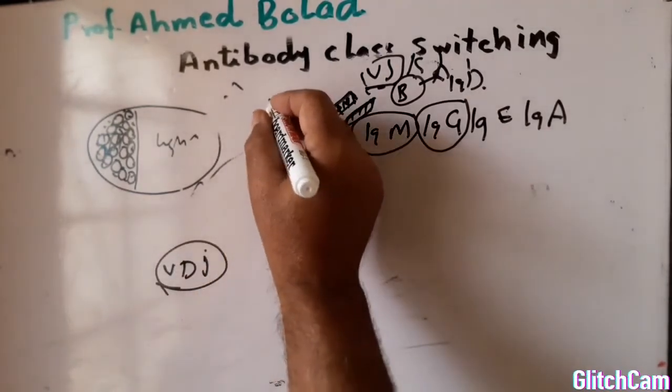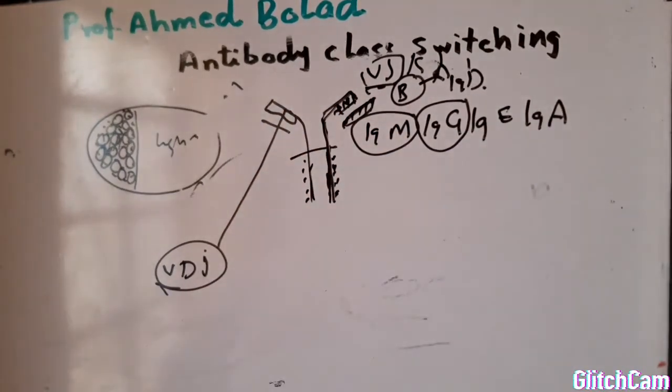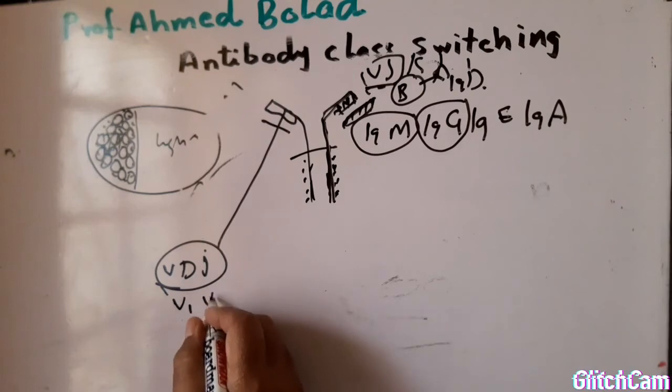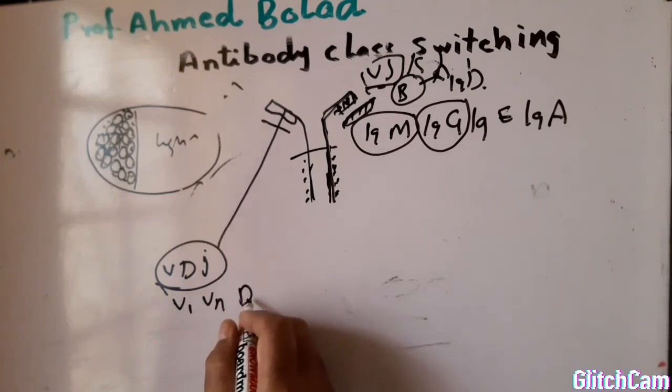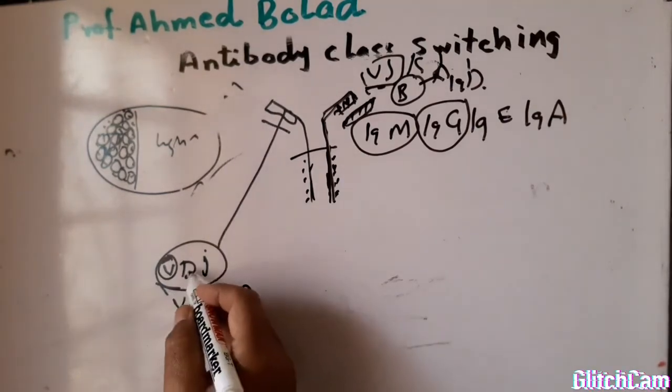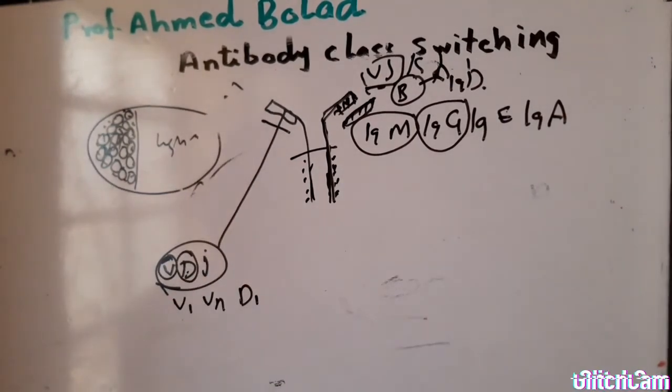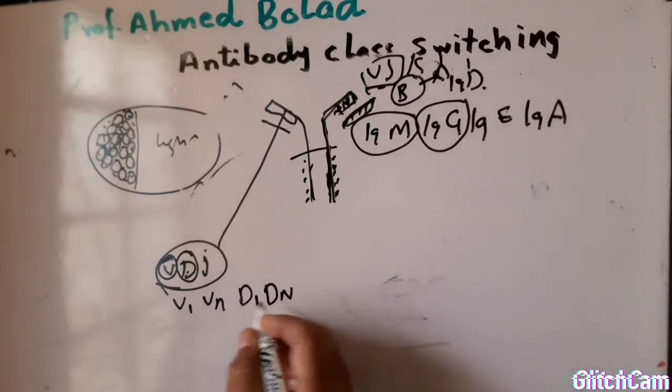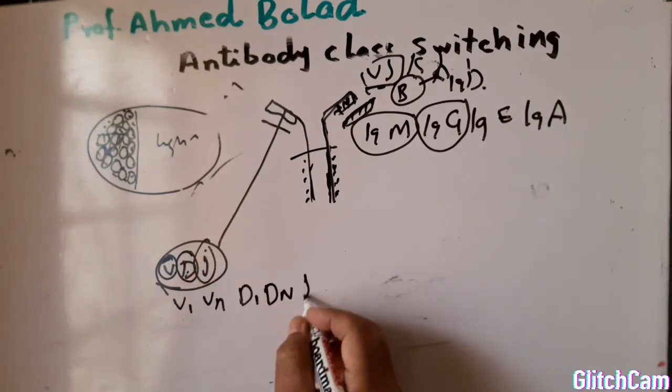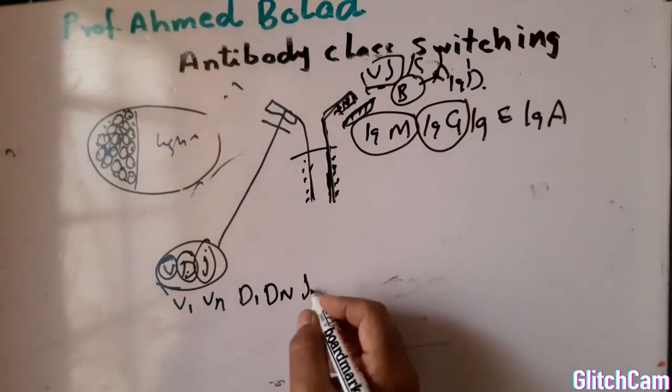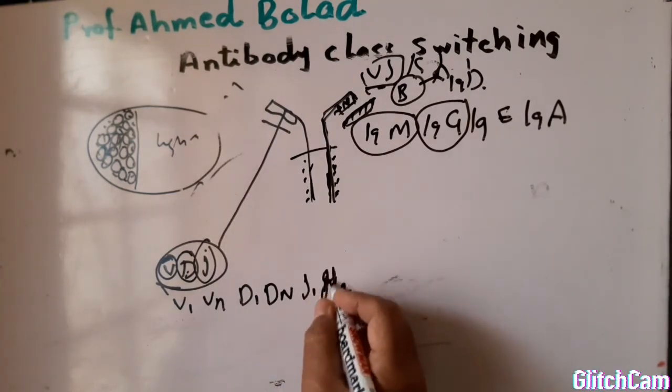This VDJ encodes the variable region of the heavy chain. V stands for variable gene segment, D stands for diversity gene segment, and J stands for joining segment of the variable region. Each can be V1, V2 up to any number; D up to any number; and J up to any number.